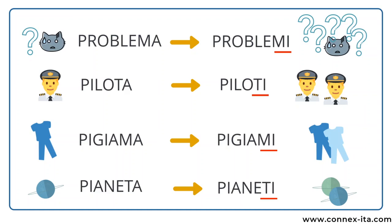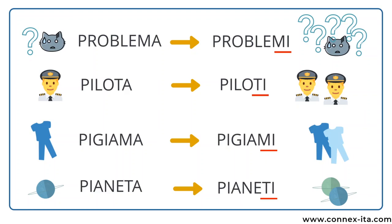These are all masculine words. Problema, which means 'the problem', becomes problemi. Pilota means 'pilot', and in the plural form is piloti. Then pigiama, that's 'pyjamas', becomes pigiami. And pianeta, which is 'the planet', in the plural is pianeti. Problemi, piloti, pigiami, pianeti.